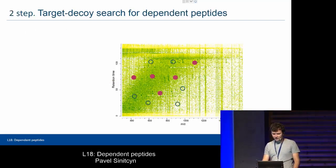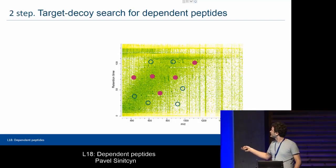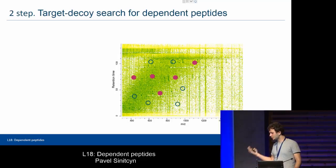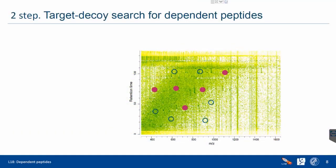After this, what we colored represents spectra already identified after all filters. But some spectra are still not identified. In a normal search, you just forget about them — it's basically the dark matter of your proteomics data sample. But dependent peptide search allows you to go a bit further.